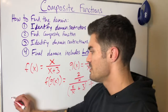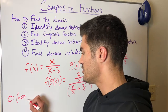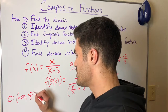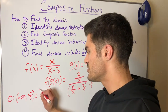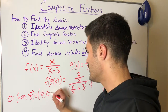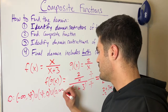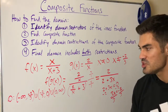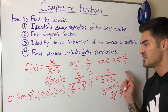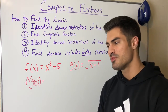In interval notation, the domain goes from negative infinity up to negative 2/3, not including negative 2/3, then from negative 2/3 up to zero, not including zero, then from zero to infinity. It's also acceptable to write: x such that x does not equal zero and x does not equal negative 2/3.